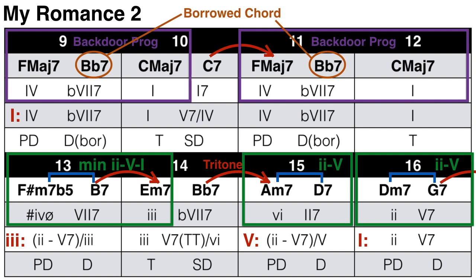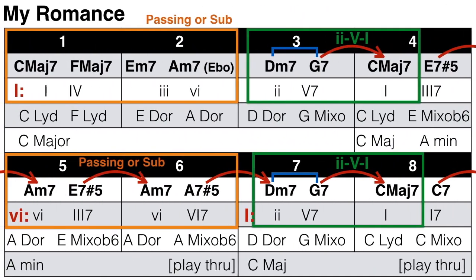Now that we've analyzed the chord progression, what do we do with this information? We can use it to influence how we improvise. In the same way that we distinguished between the first and second level chord progression, I'm going to make a similar distinction with improvisation: we can have a first level improvisation or a second level improvisation.